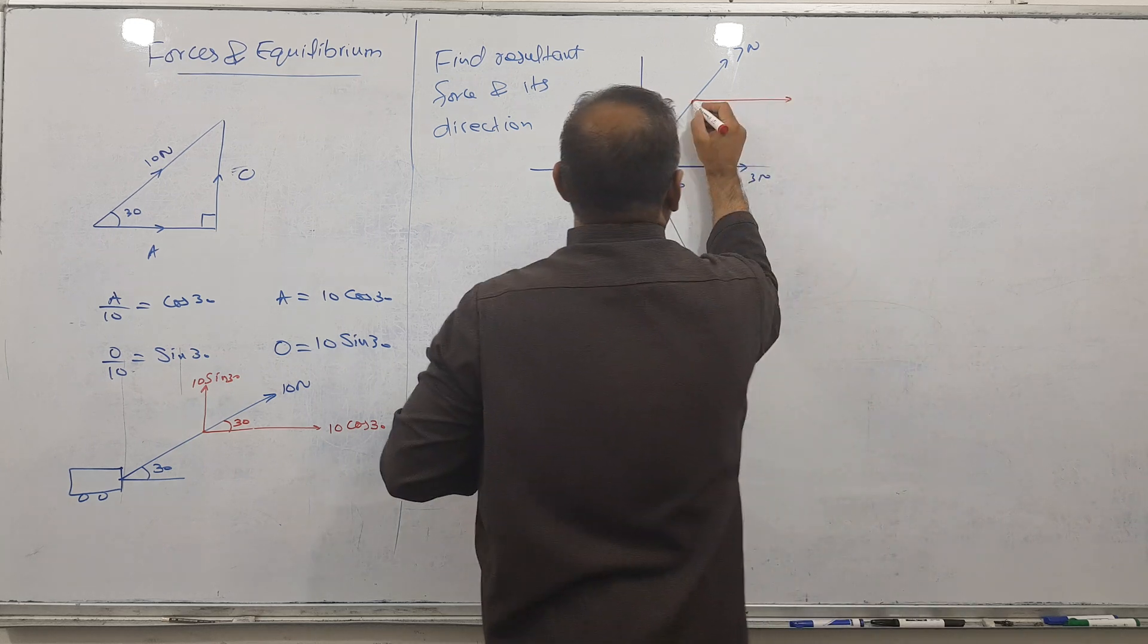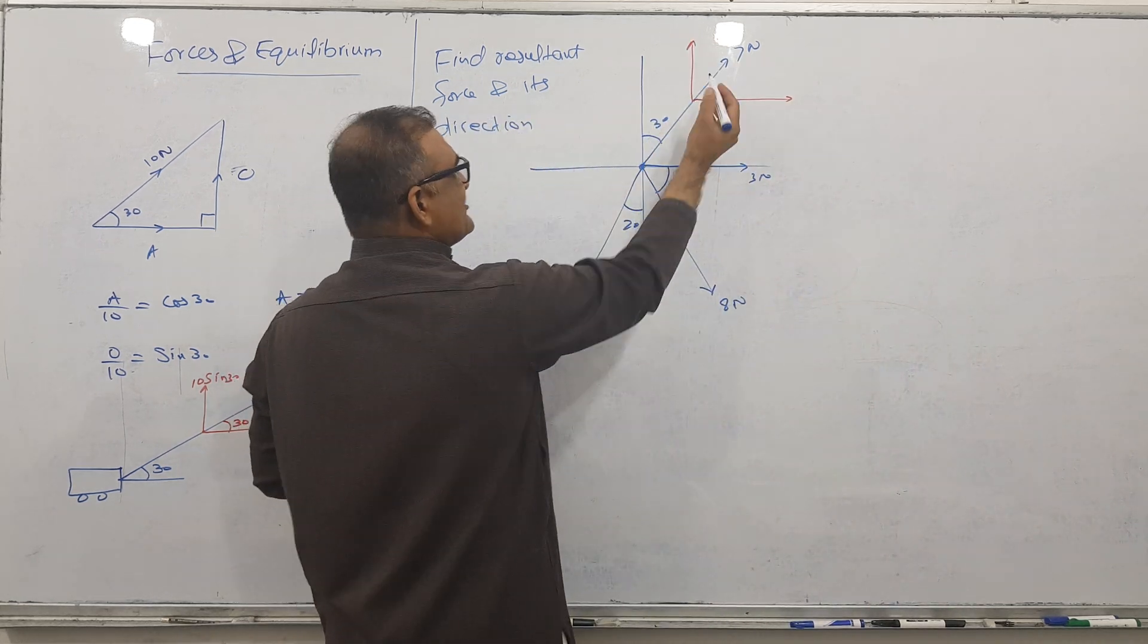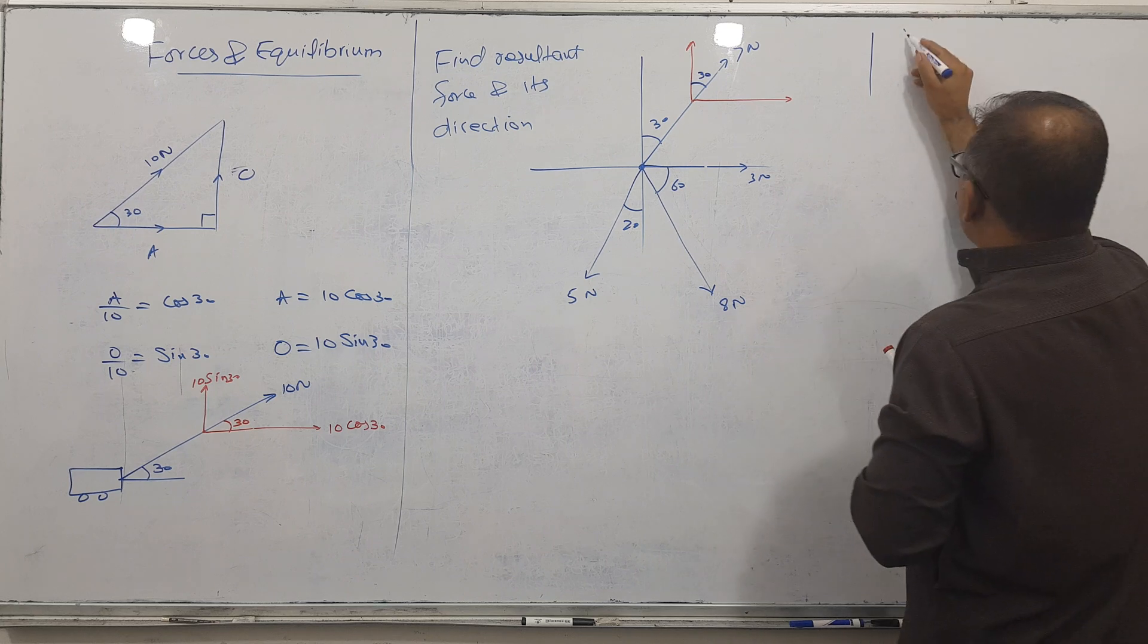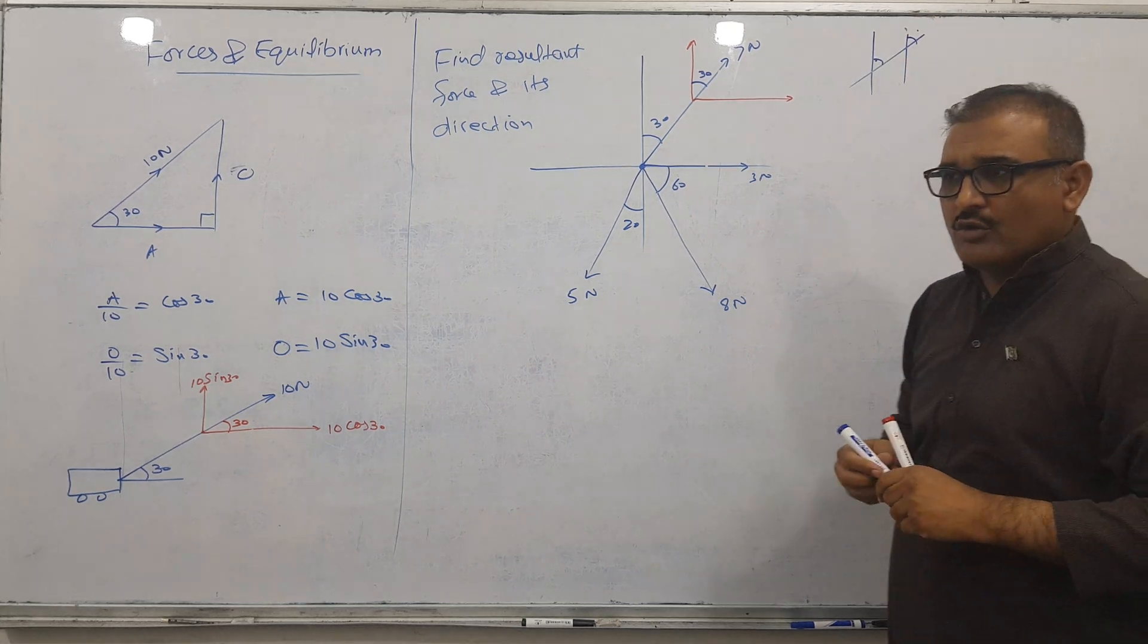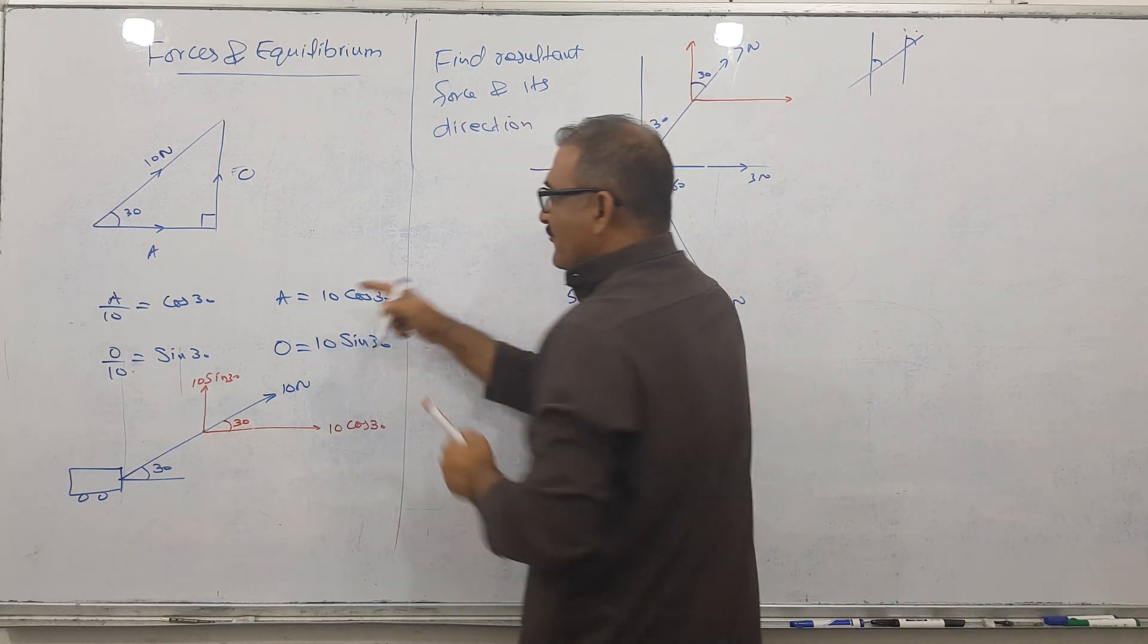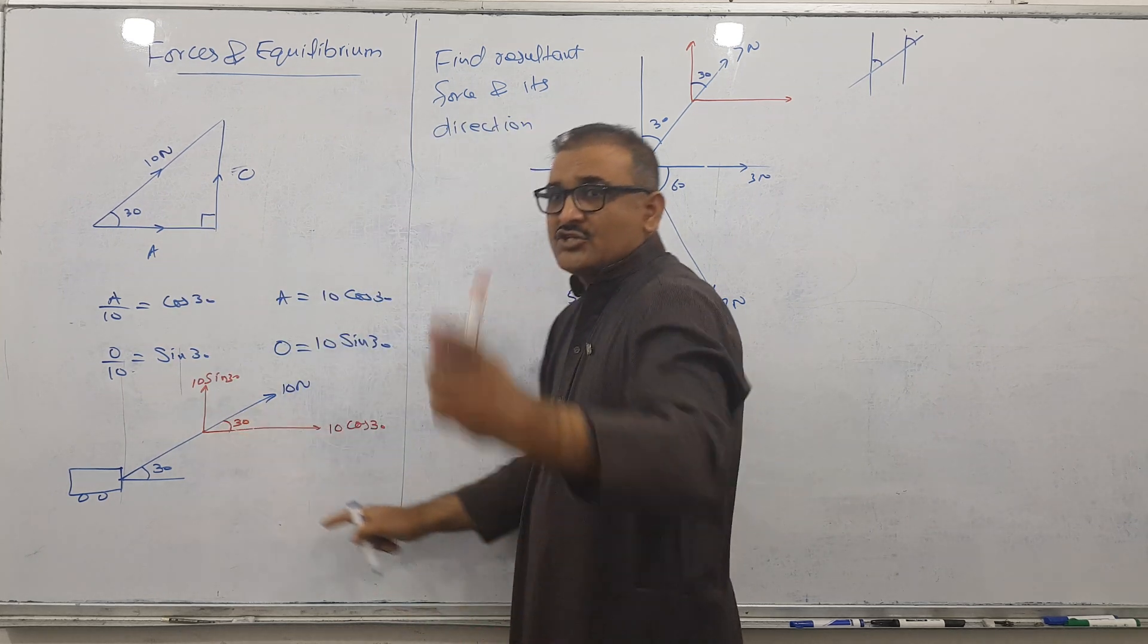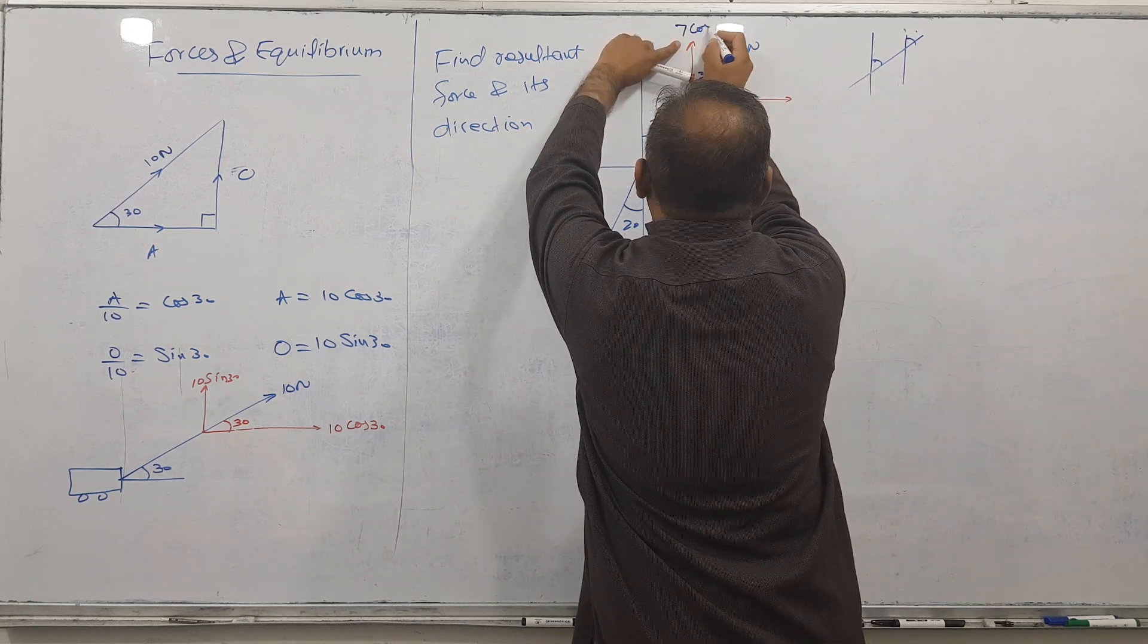This has two components: one parallel to x-axis and one parallel to y-axis. This is 30 given, so when two lines are parallel, corresponding angles are equal. Angle given is cos component, angle not given is sine. So this is 7 cos 30 and 7 sine 30.